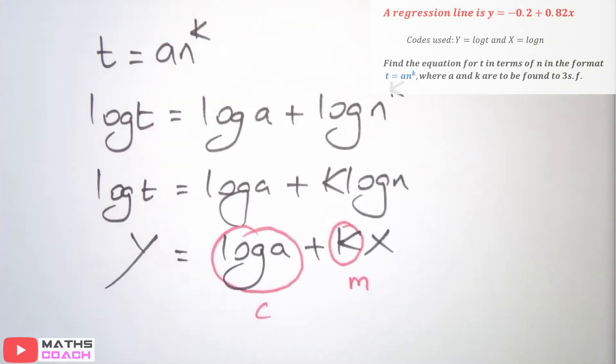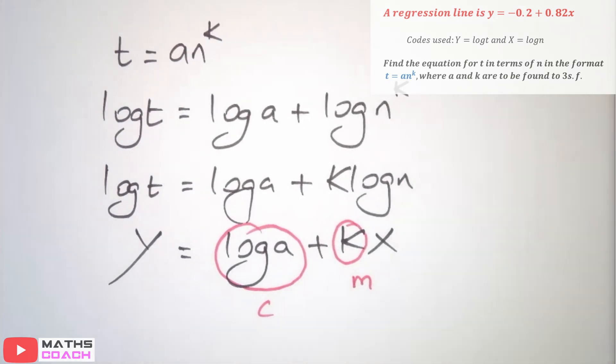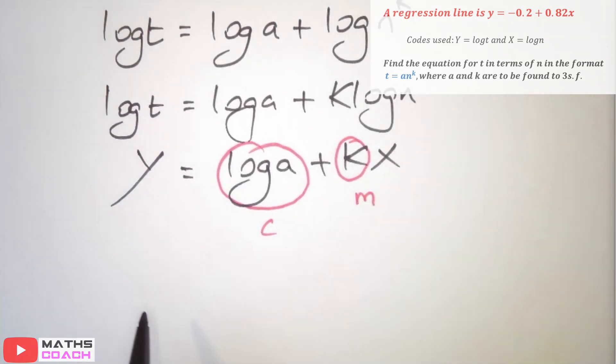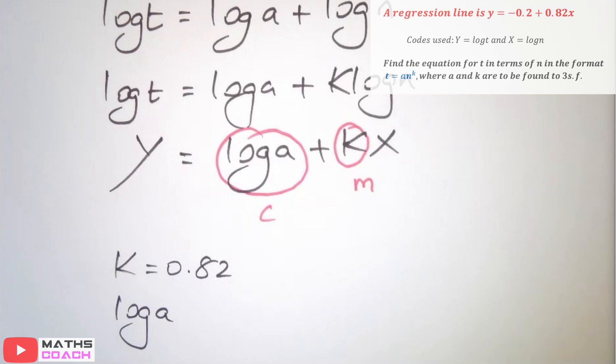So, if we move on from there, we know that we have, from our question, a gradient of 0.82. So that means k would equal 0.82. We have an intercept of negative 0.2. Well, we can then say, log of a would equal our constant, which is minus 0.2. Now the question was, a and k to be found. Well, we've already got k, so we can say, and say safely, that k is 0.82.